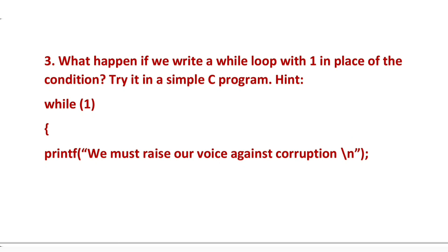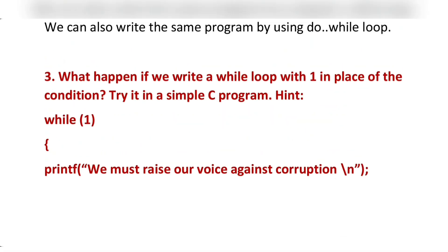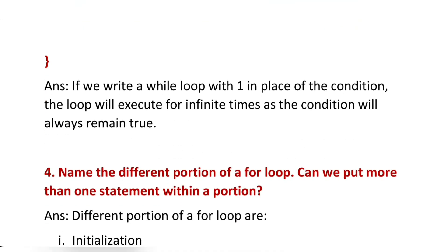Here one program is given: while(1) printf 'We must raise our voice against corruption'. When we run this program, it will run for infinity time because in computer 1 means true and 0 means false. Here in bracket we are writing one, that means true. While true, the condition will always be true, that's why the program will continue for infinite time. The answer: if we write a while loop with 1 in place of the condition, the loop will execute for infinite times as the condition will always remain true.